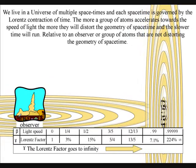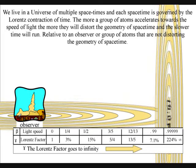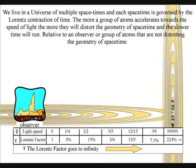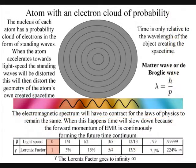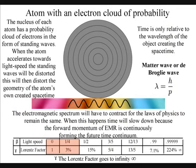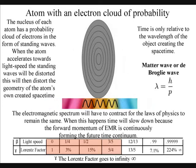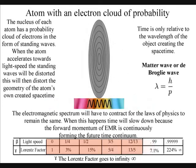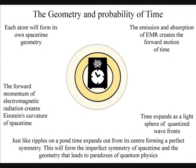This is why light travels slower through glass, water, and a gravitational field. The accelerating twin will distort the geometry of its own space-time, from the smallest atom to the entire electromagnetic spectrum, which will have to contract for the laws of physics to remain the same. When this happens, time will slow down, because the full momentum of electromagnetic radiation is continuously forming the future probability of the time continuum.